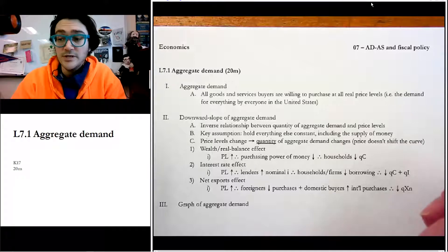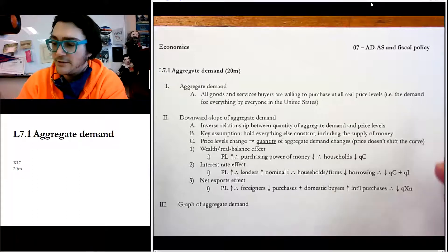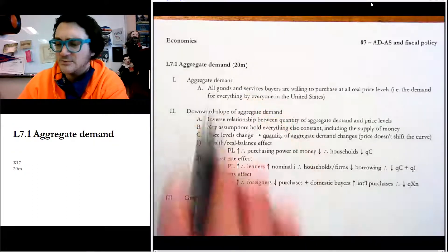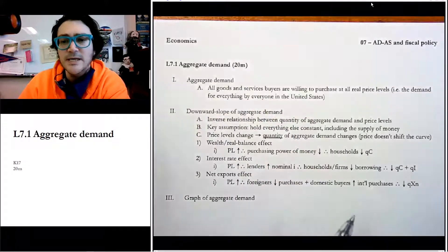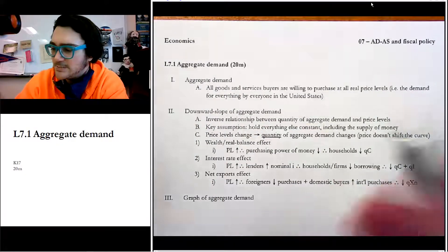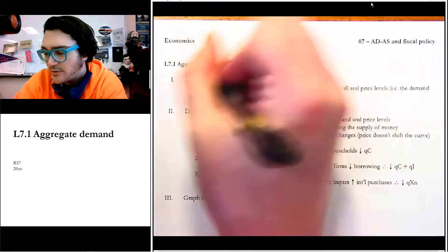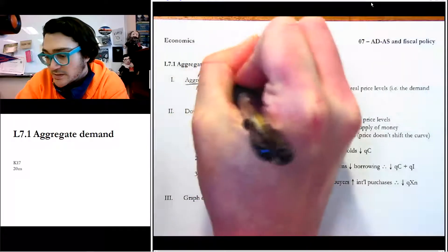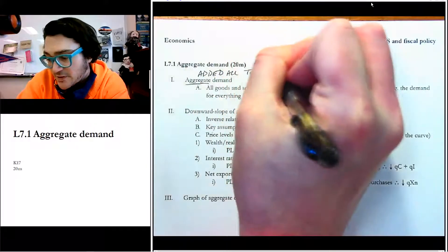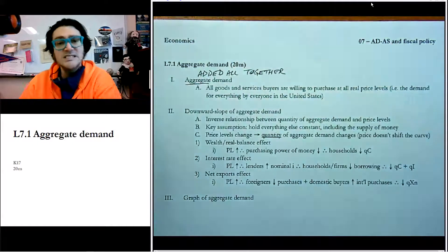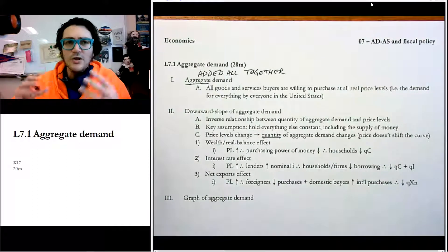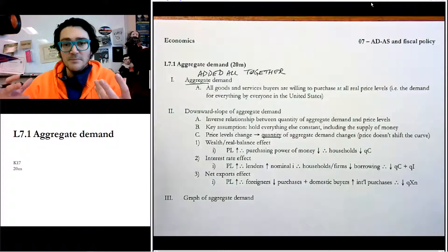So our three topics are: lecture 7.1 aggregate demand, and AD and AS are going to be 7.1. Let's get started. Aggregate demand — 'aggregate' is a big scary word, but it just means added all together. When you've added everything together into one spot, it's aggregate. So this is the demand for all the goods and services that buyers are willing to purchase at all of the different price levels in a country.